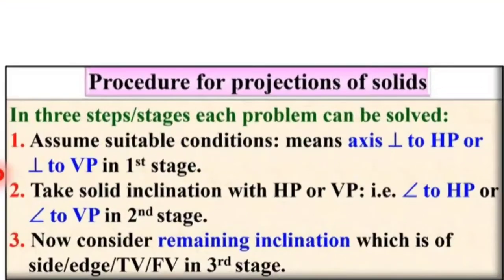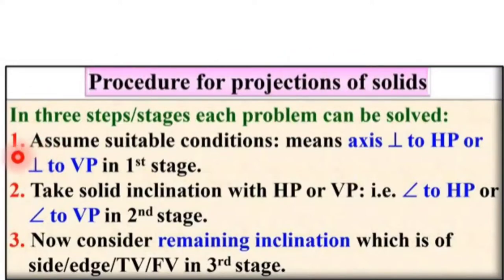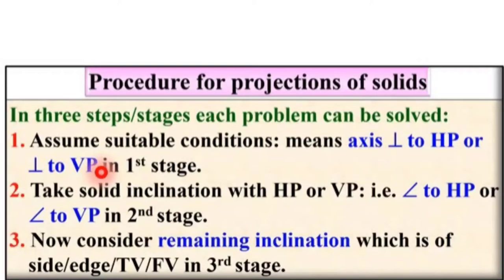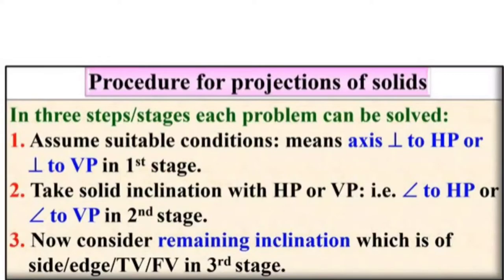As discussed in earlier problems, there are basically three stages for the projection of a solid — these are the maximum three stages required to solve problems related to projections of solids. In Stage 1, you have to assume the axis is perpendicular to HP or perpendicular to VP. Here the solid is a cone, so you assume the axis perpendicular to HP or VP depending on the given description.